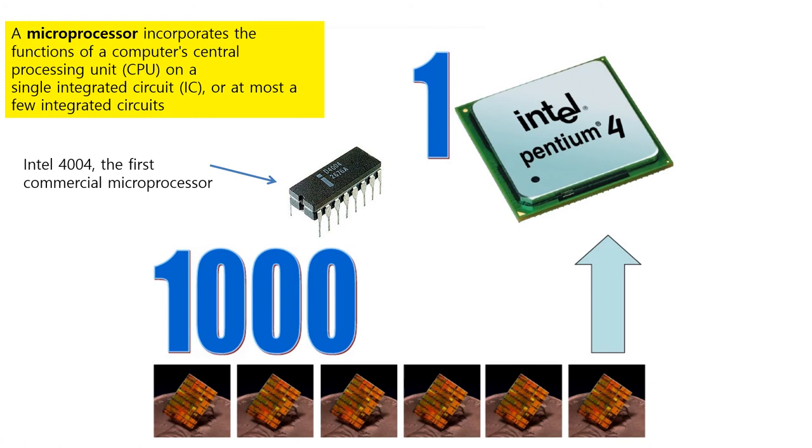Microprocessors also moved out of the realm of desktop computers and into many areas of life as more and more everyday products began to use microprocessors. As these small computers became more powerful, they could be linked together to form networks, which eventually led to the development of the internet. Fourth generation computers also saw the development of GUIs, mouse, and handheld devices.